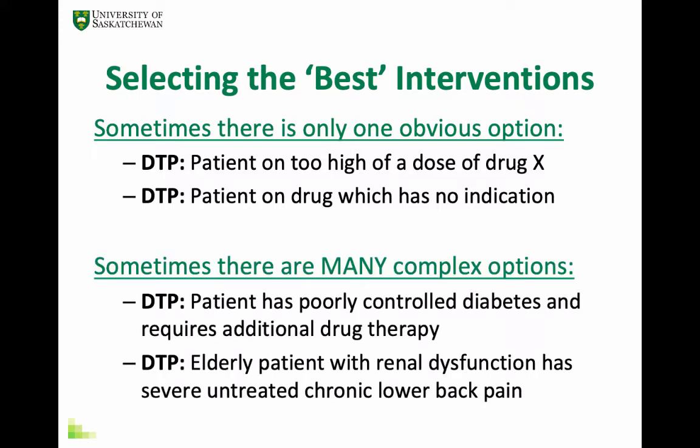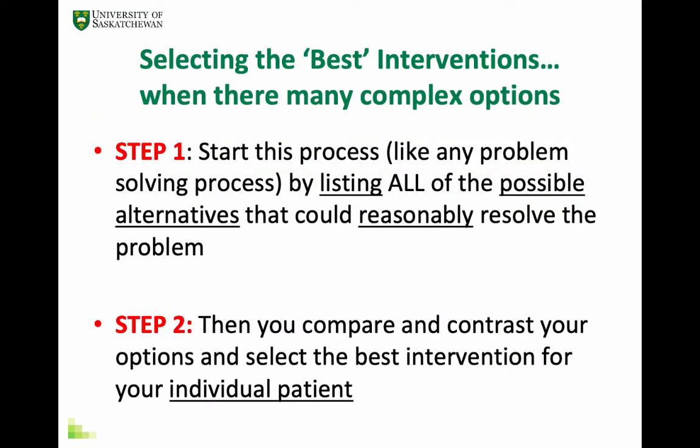Things get much more complicated when there are many potentially reasonable alternatives, such as when you want to start a new drug to treat poorly controlled diabetes or chronic pain, and there might be as many as eight or ten different reasonable options to choose from. When you have a drug therapy problem with multiple potential therapeutic interventions, you approach it just as you would any problem in your life: first, make a list of all the possible options that could reasonably solve your problem, then make a list of the pros and cons for each option to help you pick the best one.